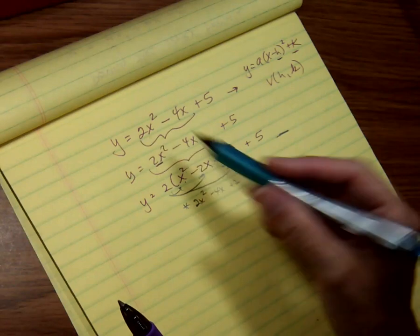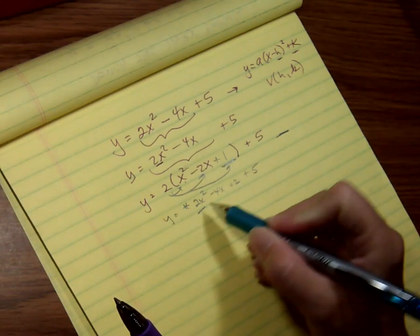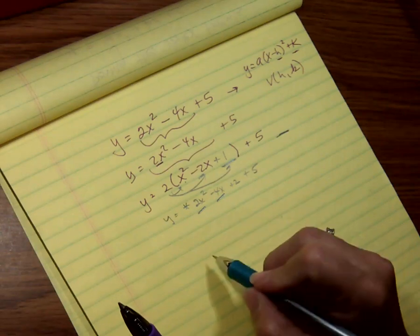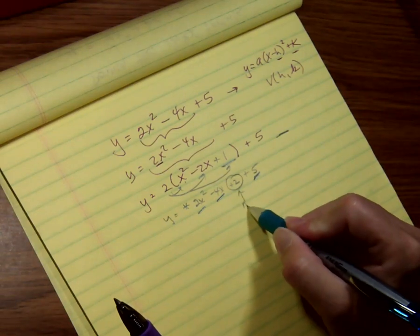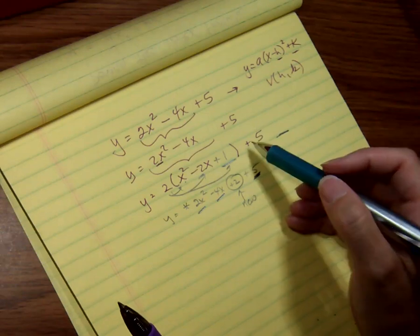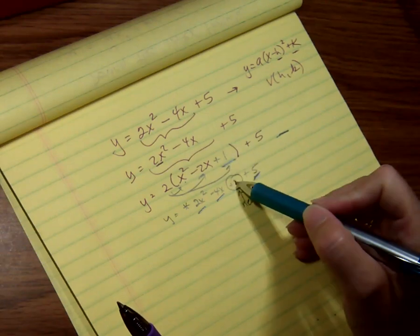So looking back at the original equation, y equals, that was part of the original, that was part of the original, and that was part of the original. This is the new. That's what I really did. So I didn't add 1. I really added 2.